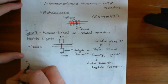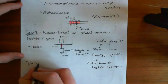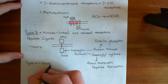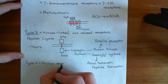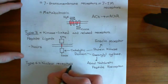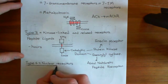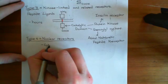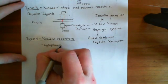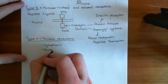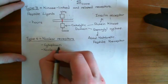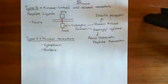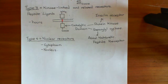Type 4 receptors are called the nuclear receptors, though this is a slight misnomer because some are present within the cytoplasm and only migrate to the nucleus once their ligand is bound. So these receptors are either in the cytoplasm or actually in the nucleus. When their ligand binds, they translocate to the nucleus if needed, bind to DNA, and act as transcription factors, changing gene expression within the cell.